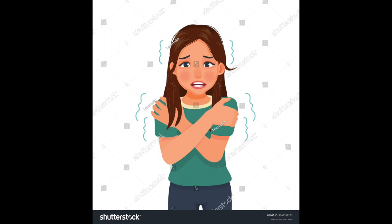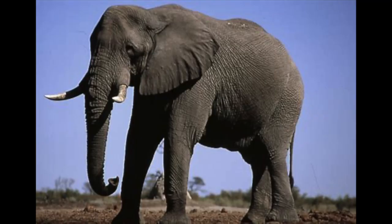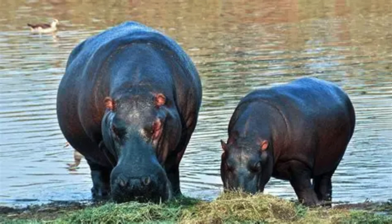One of the first scientists to be interested in scaling effects in biology was Galileo, who in his book 'Two New Sciences' took a very simple example: if you multiply, all things being equal, the size of an animal by three, its volume and therefore its weight is multiplied by 27, but the section of its bones which must ultimately support its weight is only multiplied by nine. It is therefore necessary to change their shape a lot to increase the section. This explains why the femurs of elephants do not have the same shape as those of dogs, and even less of mice, as the massive appearance of large animals like the elephant and hippopotamus owes nothing to chance.